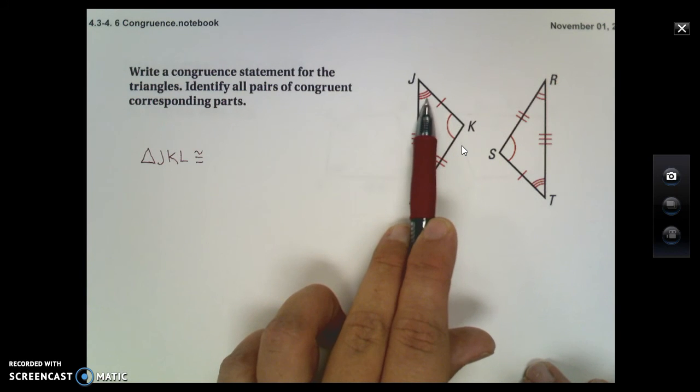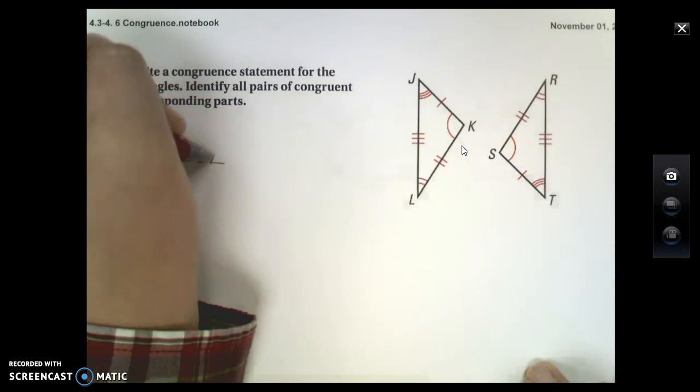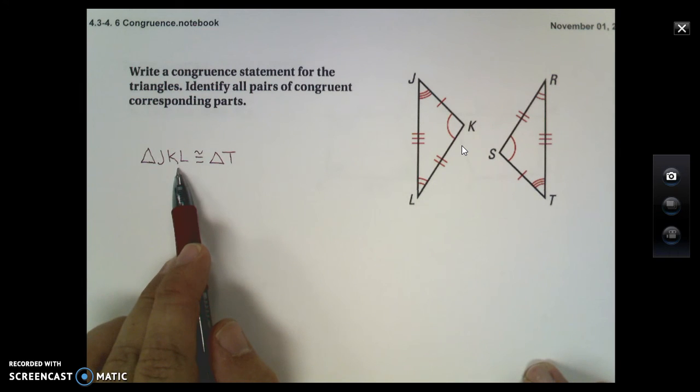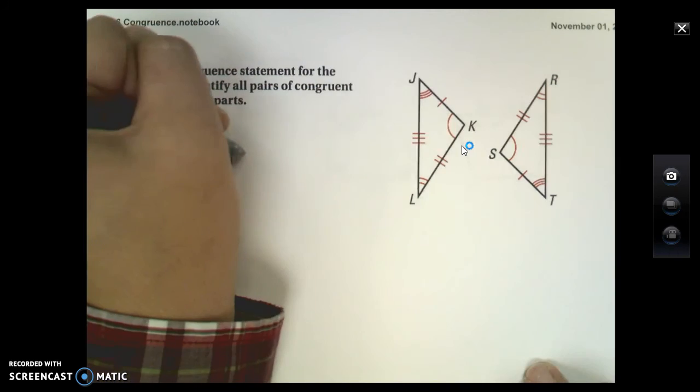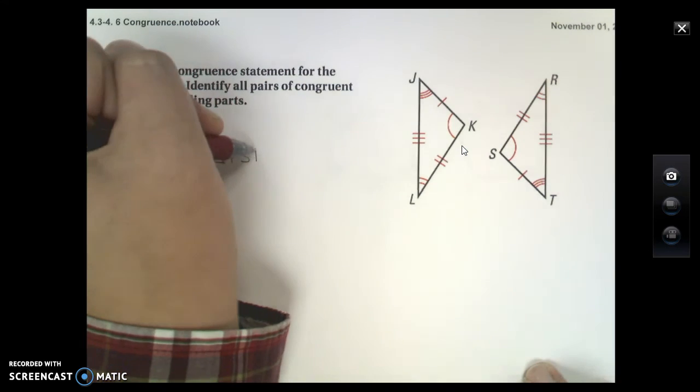Well, J has the three marks for congruent, as T does. So J and T are corresponding to each other. Next, I need to correspond something to K. That's going to be S. And last but not least, I need to correspond with L, which is going to give me R.